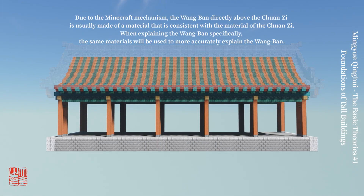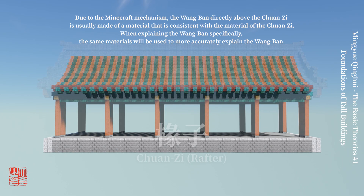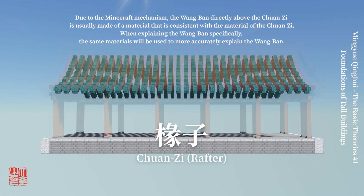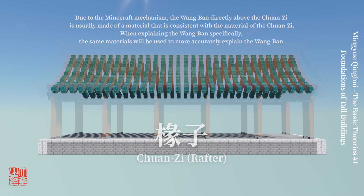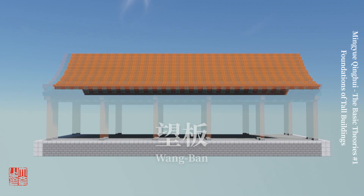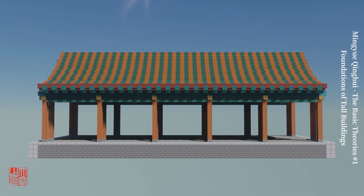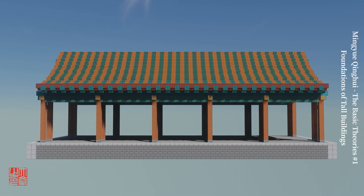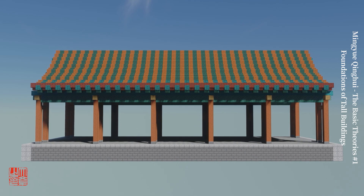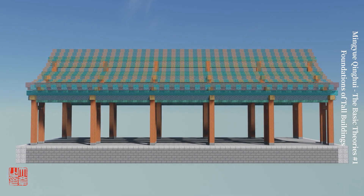Firstly, the structure directly supporting the roof tiles is composed of chuanzi, which is somehow similar to what's called a rafter, and wangban, which is a layer of wooden planks nailed on the top of chuanzi. At this point, our understanding of the roof is sufficient, so let's study the wooden structure beneath it.